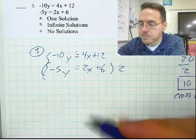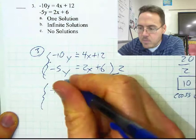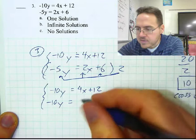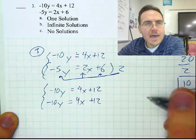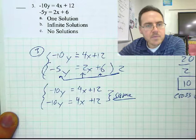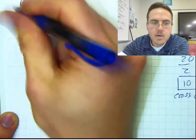The top row is unaffected: negative 10Y equals 4X plus 12. For the bottom row, I'm going to distribute that 2 to every term. 2 times negative 5Y is negative 10Y. 2 times 2X is 4X. 2 times 6 is 12. They're the same line! If they're the same line, they're graphed right over the top of each other, and they have infinite solutions. So the answer to this one, without any further work, is B.